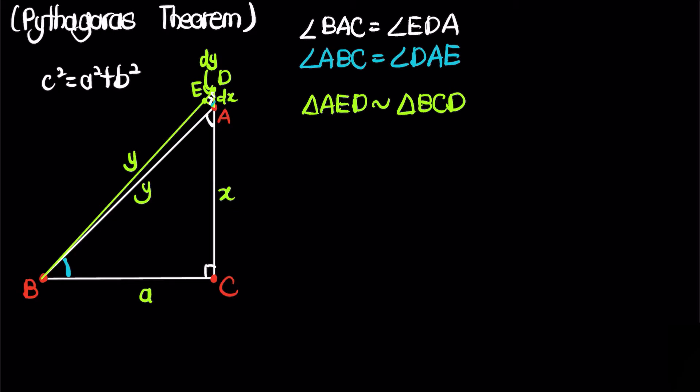So now we can write down the ratios that result from the similarity of triangles. We have that dy over dx is equal to x over y. It's because we can see that dy is the height of the triangle AED, and x is the height of the triangle BCD. Similarly, dx is the height of the triangle AED, and y is the height of the triangle BCD. So now we can rewrite this as y times dy is equal to x times dx.